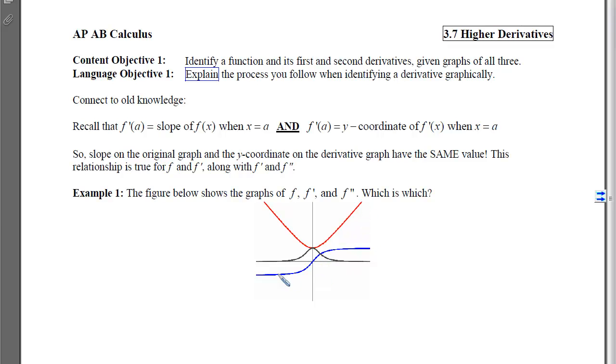And we can see that the blue graph has negative y-values and then a zero and then positive y-values. So there's a chance that this red one has a derivative that is the blue.